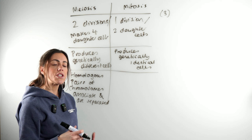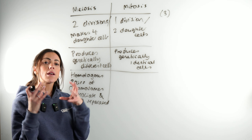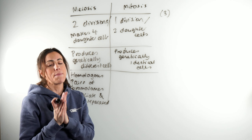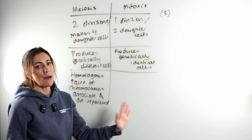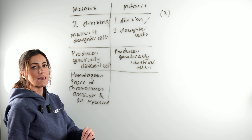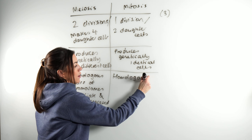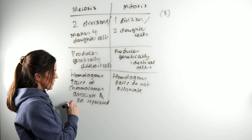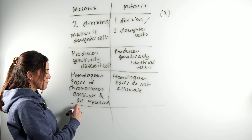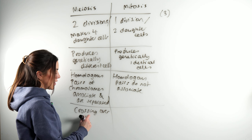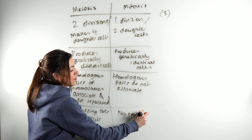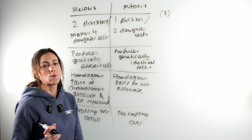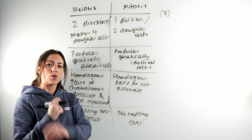During meiosis one, the homologous pairs associate, form bivalents, and then the homologous pairs are separated. That does not happen in mitosis — homologous pairs do not associate and are not separated. One other thing you could say: with meiosis, crossing over occurs. With mitosis there's no crossing over because you don't get those bivalents, so you don't get bits of chromatid switching position or those chiasma forming.